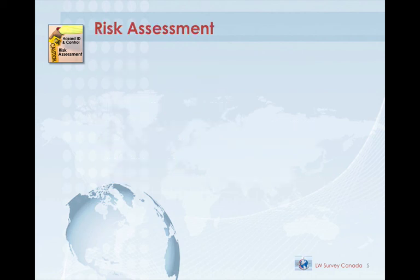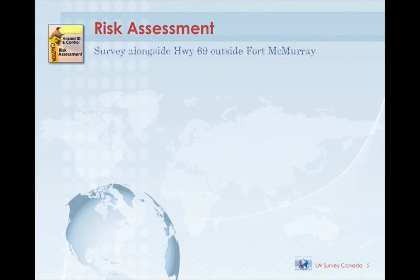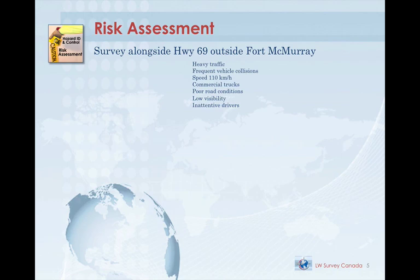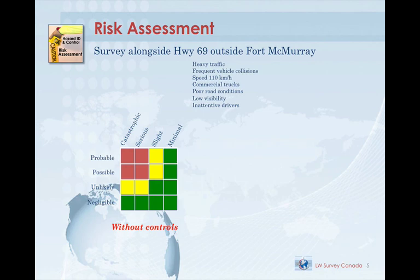Now we assess the probability these events might occur and the severity of the consequences if they do. Using the roadside work example again with the hazard of a vehicle striking a worker: let's say the work scope is to survey a section of Alberta's Provincial Highway 69 outside Fort McMurray. Traffic is heavy, vehicle incidents are frequent, and the speed limit is 110 kilometers an hour. Based on our pre-job research, if we send you out to work on this stretch of road without any hazard controls, an incident is possible and the severity of your injuries would be catastrophic.